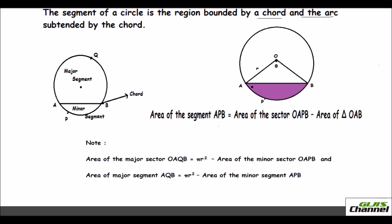Now that you've found the area of the minor segment, if they also ask for the major segment, you don't need to repeat all that work. All you need to do is find the area of the circle and subtract the area of the minor segment — then you get the major segment.